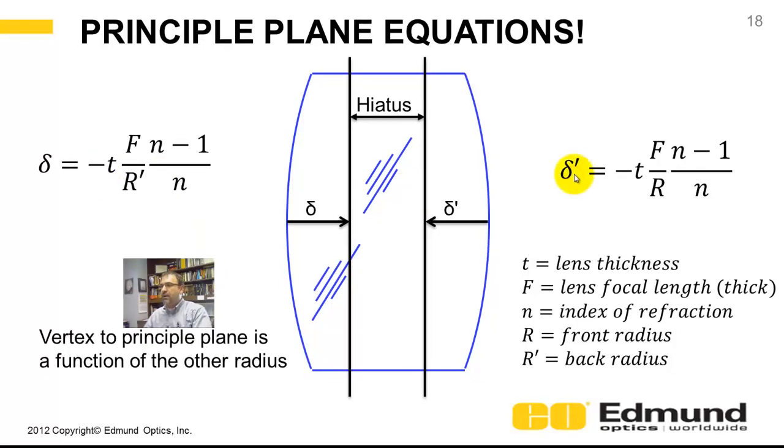Likewise, the back principal plane is given in this equation. The distance from the vertex to the principal plane is a function of the back radius of curvature and the focal length.